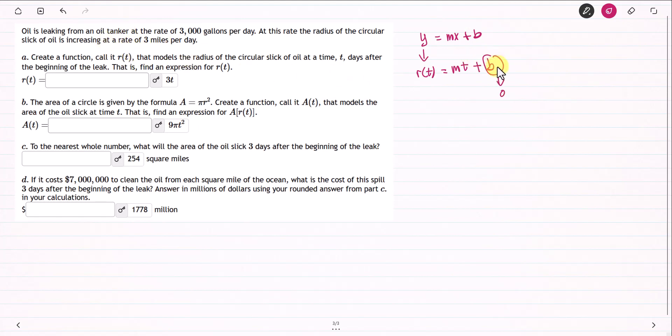Because in the beginning, there was no leaking. So it should be 0. And then you have R of t equals 3t, because the rate of change is 3 miles per day. That's why the answer is 3 times t.